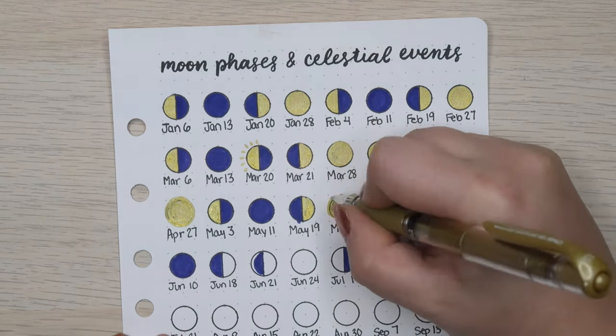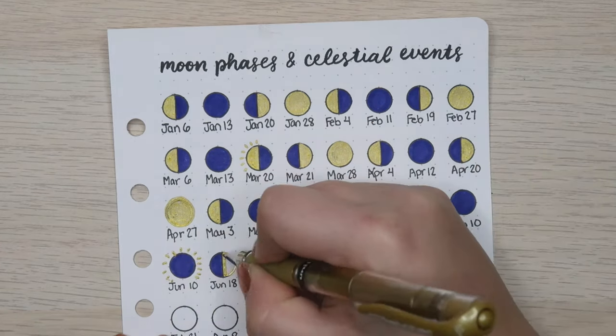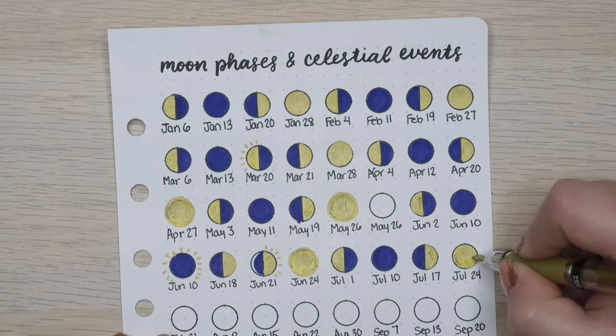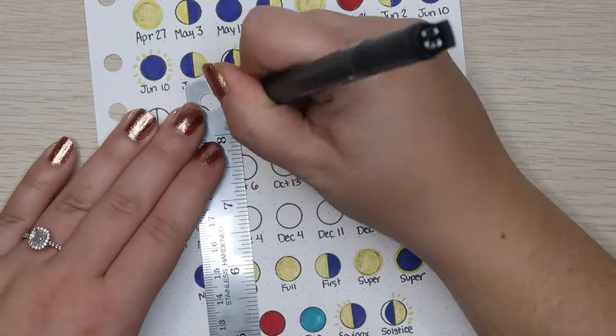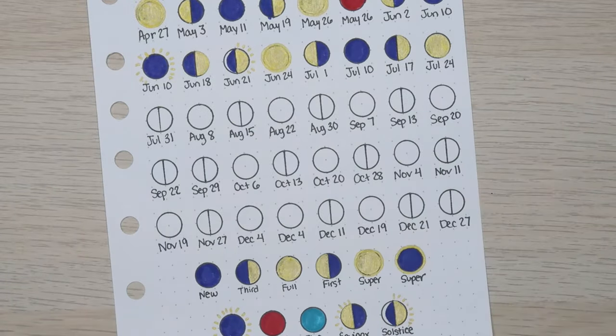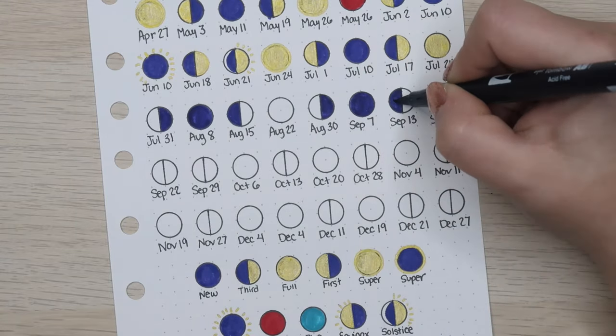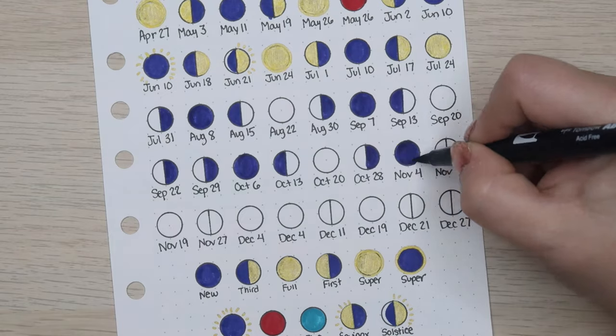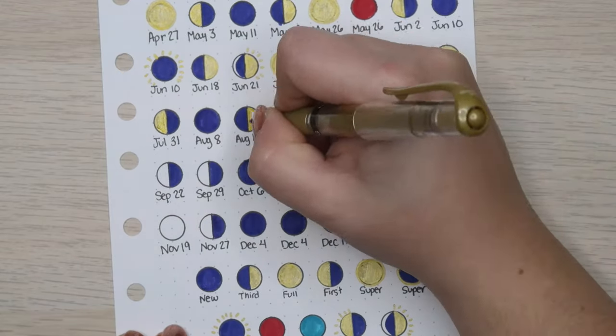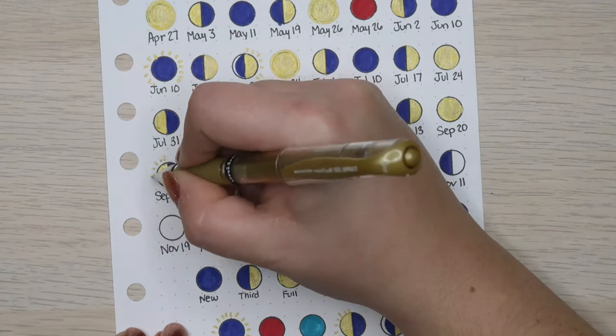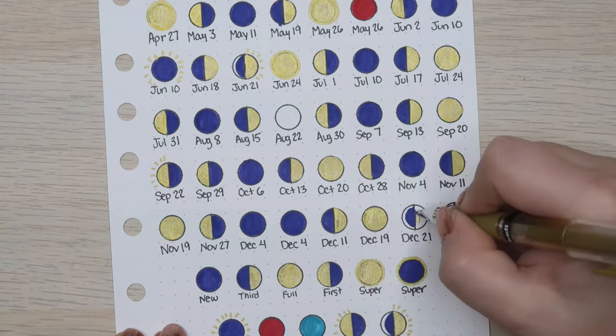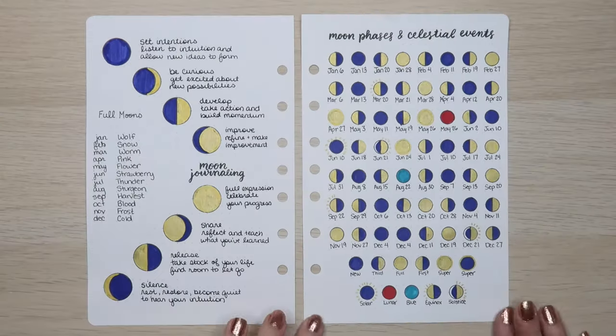For those of you who are new to my channel, I actually moved my bullet journal into a binder this year instead of using a bound notebook. I used to run out of pages by June or July, so I usually stayed away from really time consuming spreads. But now that I have a bullet journal in a binder, I'm motivated to make spreads that I only have to make once a year or one time and never have to make again.